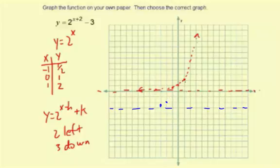The third point is 1, 2. 2 left, 1, 2. And then 3 down, 1, 2, 3. Right there.